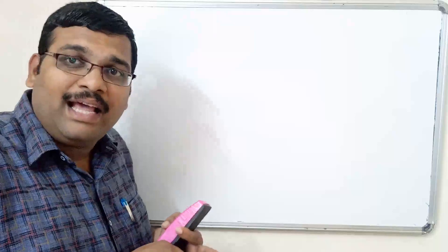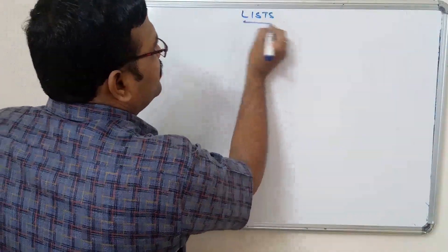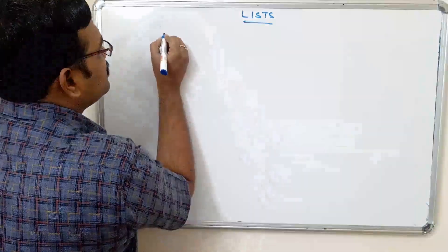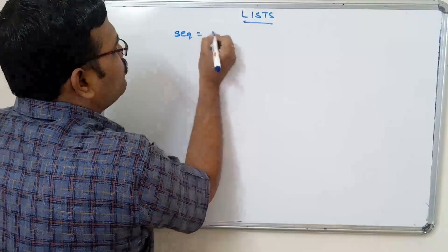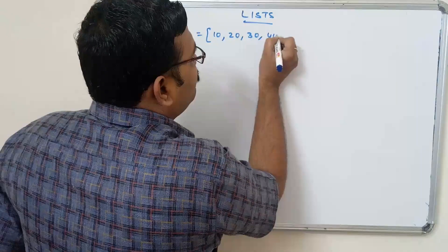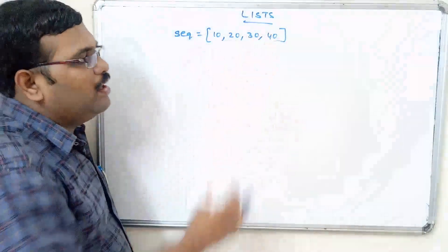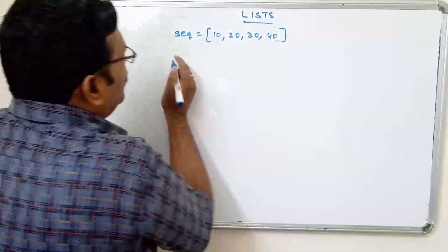Now let us see how to access elements in the list, how to update elements, and how to delete elements. First, let us create a list. The list name is 'sequence', so: sequence = [10, 20, 30, 40]. This is a numerical list containing all numerical values.